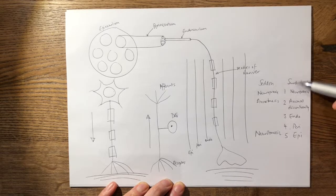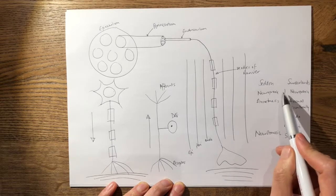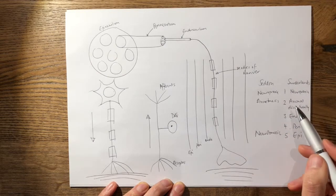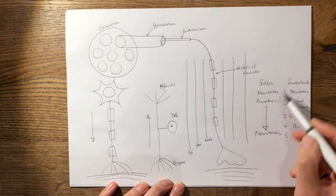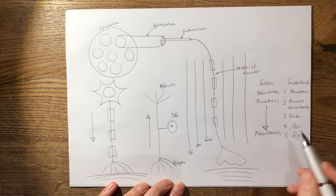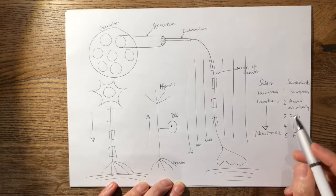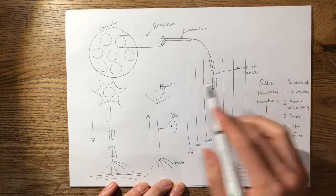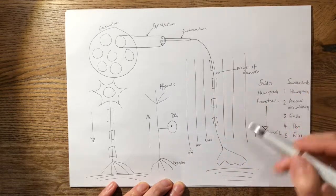And the reason I've written it down like this is because a Sunderland one would correspond to a Seddon neuropraxia, whereas a Sunderland two, three, and four would correspond to a Seddon axonotmesis, whereas a Sunderland five, which involves the epineurium, is a Seddon neurotmesis. And I use this coronal view of the peripheral nerve to explain these classifications.